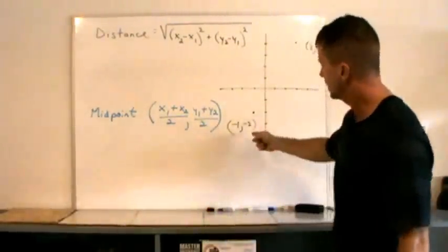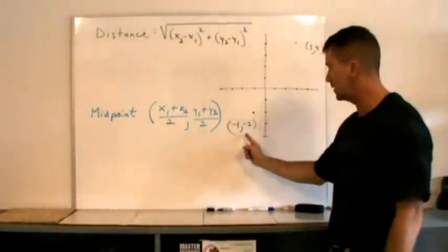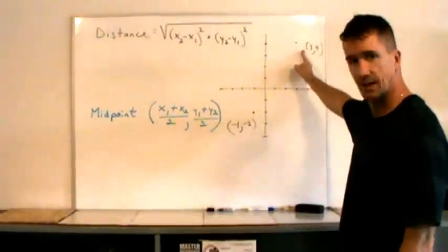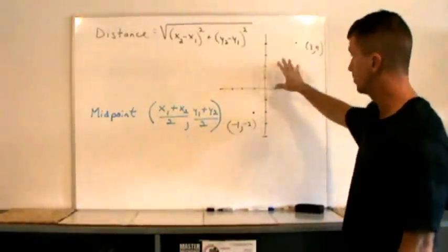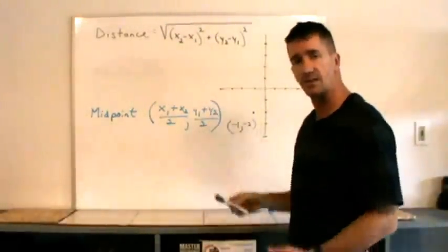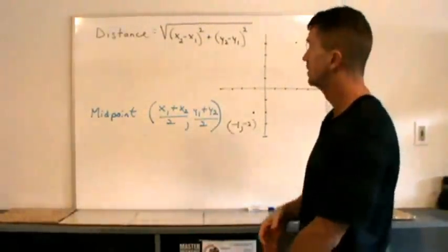I have an example here. I have the point negative one comma negative two and the point three comma four, plotted on the x-y coordinate plane. And we'll find the distance between those two points.